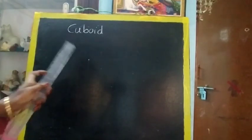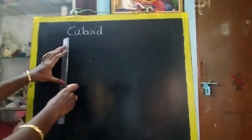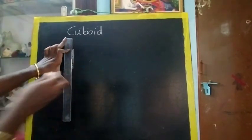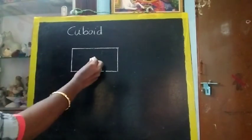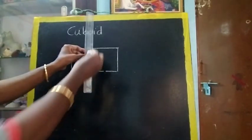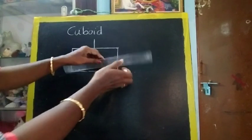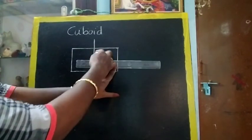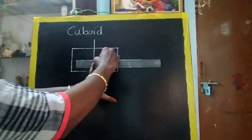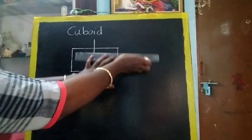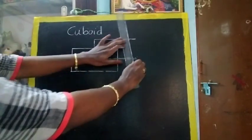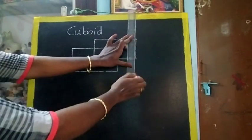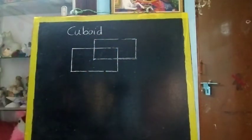Cuboid is the same as cube but you have to draw a rectangle. So same like that — first you draw a rectangle. Now the rectangle is drawn. What is the next step? Keep a midpoint, then draw a rectangle again from the midpoint. The rectangle should also be outside, and both should be of the same size. Then only your cuboid will be perfect. Now 2 rectangles are ready. Next step is join the corners.